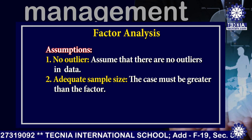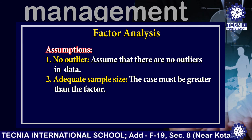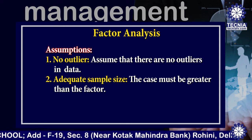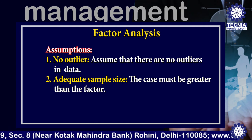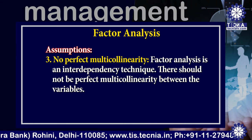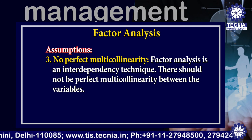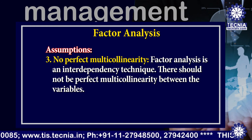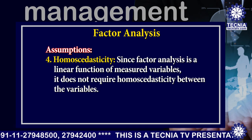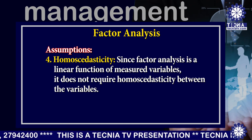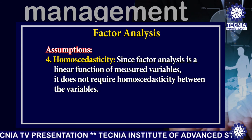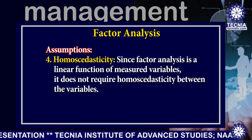Now I am explaining the assumptions. First, no outliers — assume that there are no outliers in the data. Second, adequate sample size — the cases must be greater than the factors. Third, no perfect multicollinearity — factor analysis is an interdependency technique and there should not be perfect multicollinearity between the variables. Fourth, homoscedasticity — since factor analysis is a linear function of measured variables, it does not require homoscedasticity between the variables.